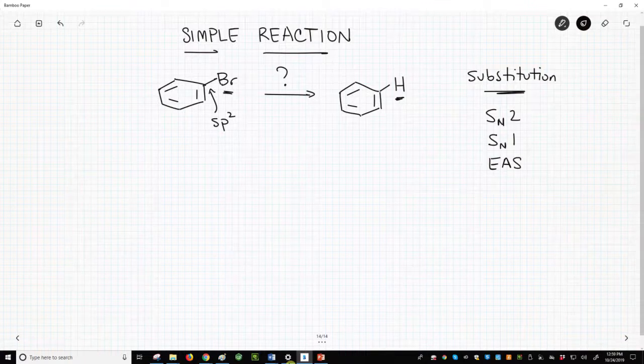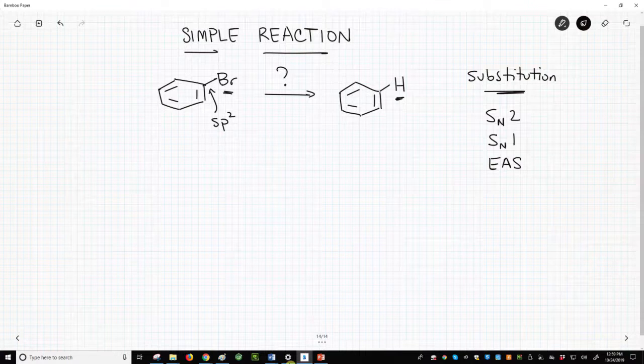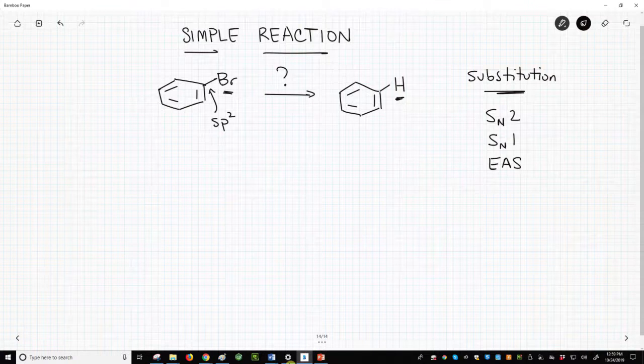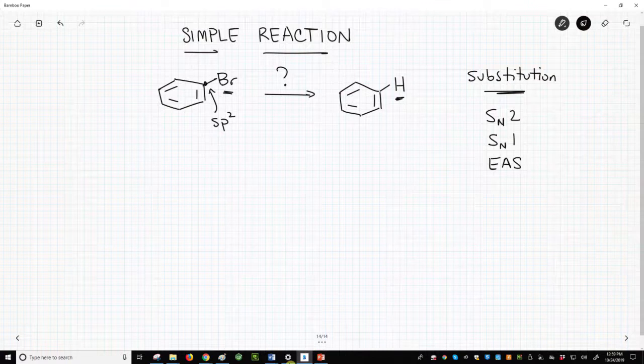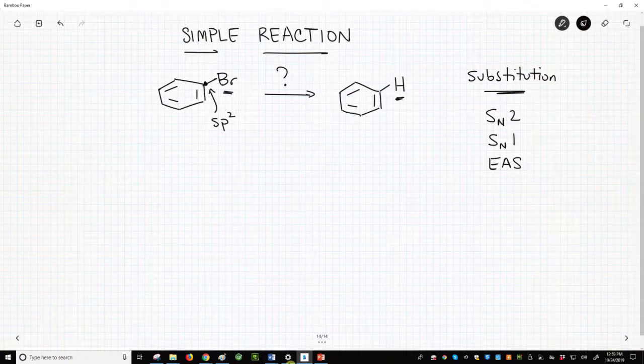One way to add a hydrogen is through a protonation. How can we get a proton to react with the neutral, non-basic carbon that bears the bromine?